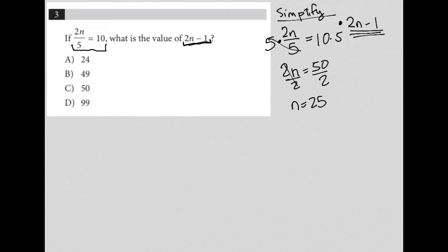But keep in mind, the question is asking for 2n minus 1. So I'm going to now say, 2n minus 1. Well, that's 2 times n. I know now that n is 25. So 2n is the same as 2 times 25 minus 1. 2 times 25 is 50. So I have 50 minus 1, and that is equal to 49.